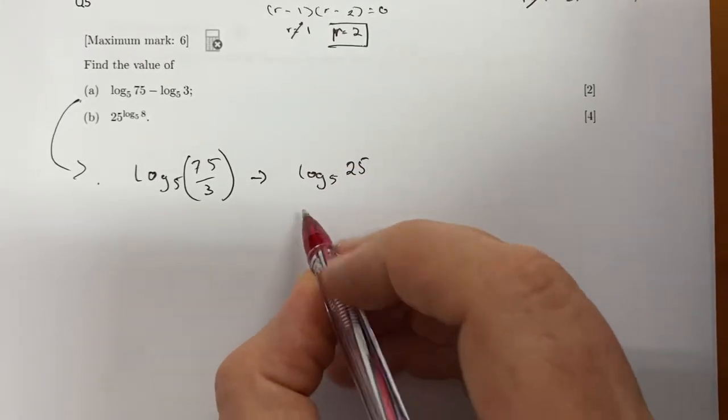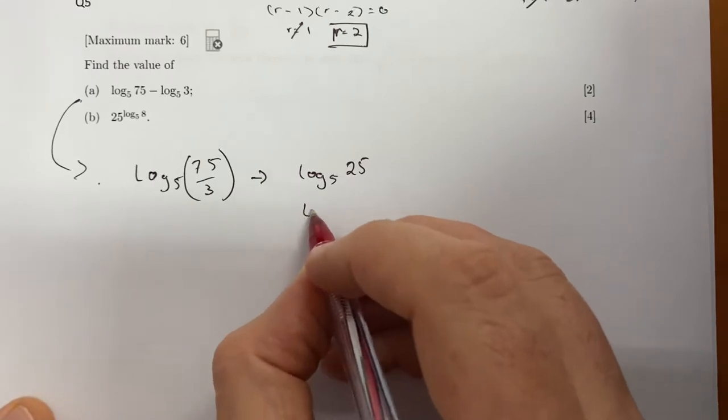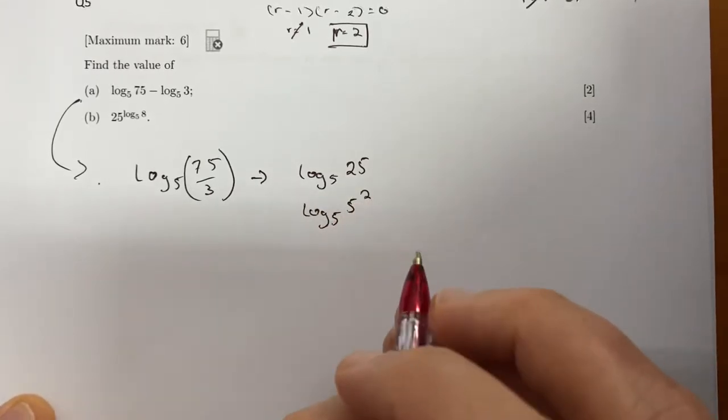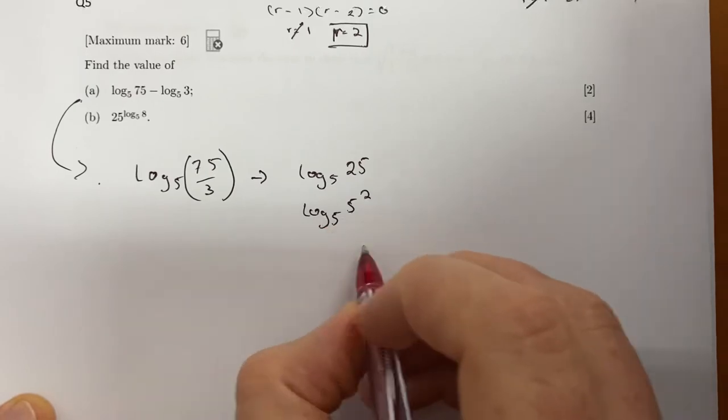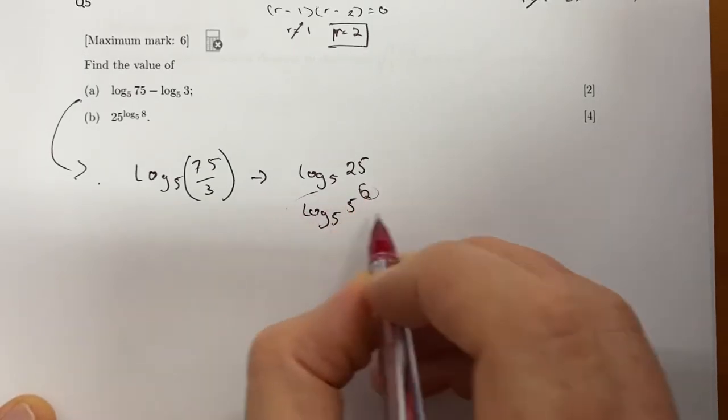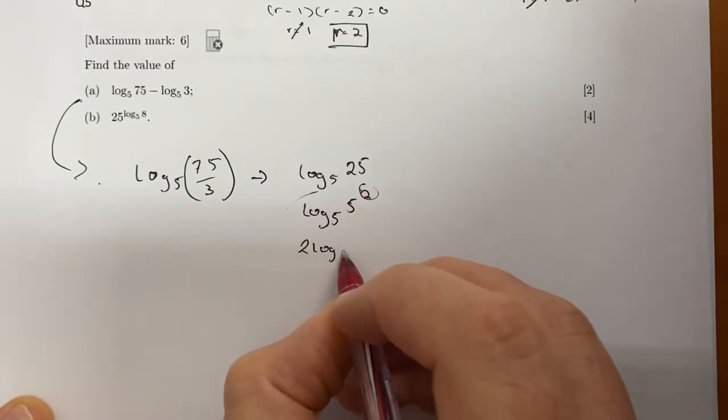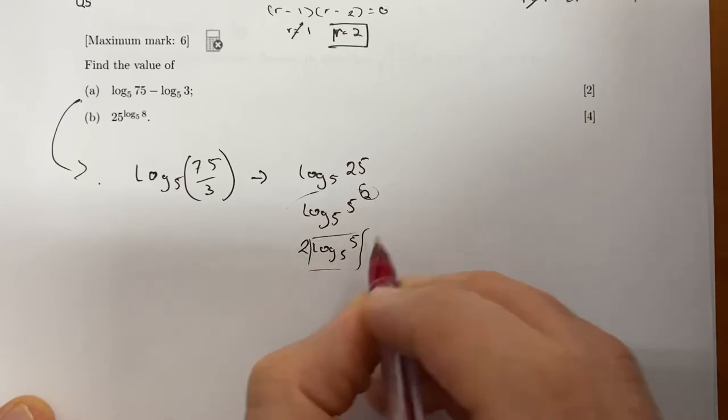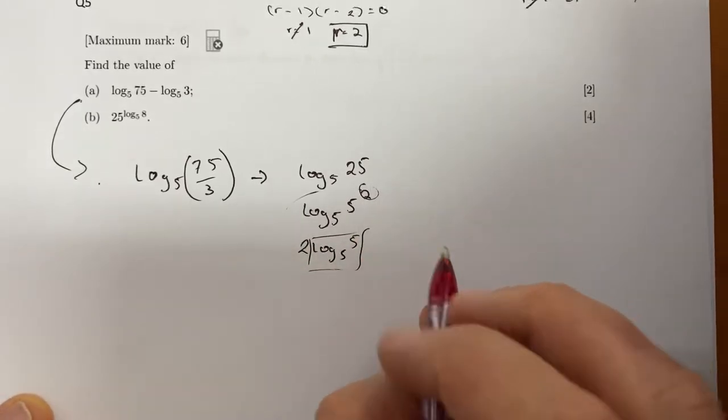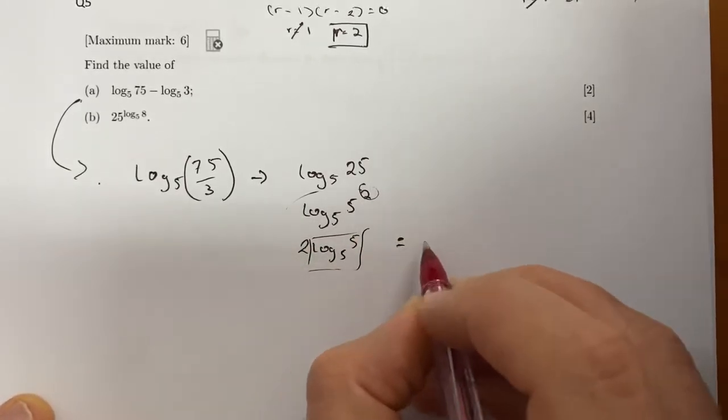That is 5², so we can write that as log₅(5²). We should be able to see that's just 2, but you can multiply it down in front to get 2·log₅5. And of course log₅5 is 1, which means 2×1, so the answer is 2 for part a.